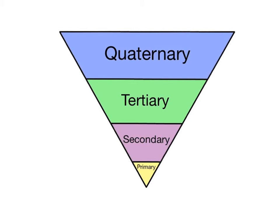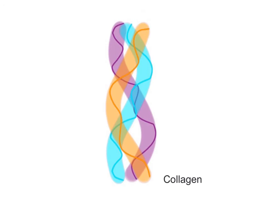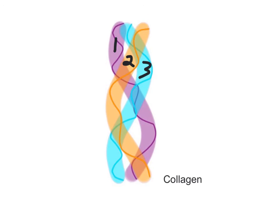The final and most complex protein structure is the quaternary, or fourth order. Quaternary proteins are very large in size and consist of two or more polypeptide chains. The one shown here is made up of four different polypeptides. Two proteins we previously learned about have a quaternary structure: the structural protein collagen, composed of three polypeptide chains, and the transport protein hemoglobin, consisting of four polypeptide chains.